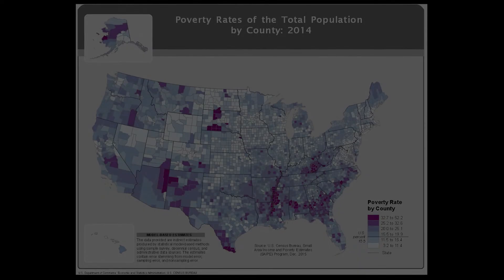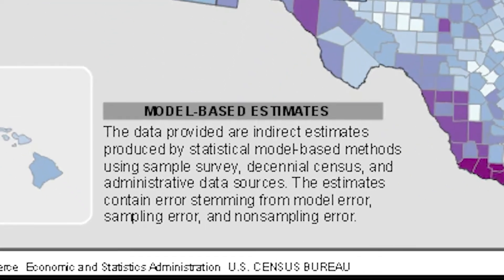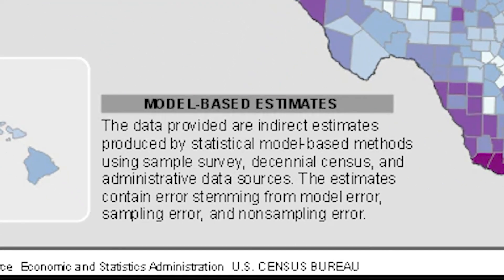For example, this map produced by the U.S. Census Bureau shows poverty rates of the total population by county. Given it is not possible to study the entire population, the map shows a sample of the population that was studied. This fact is even noted in the text on the bottom left of the map.